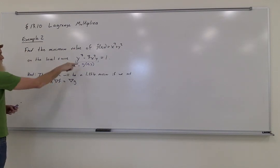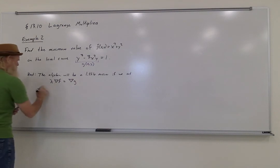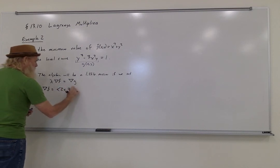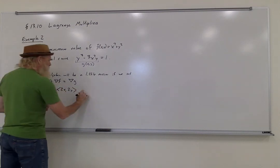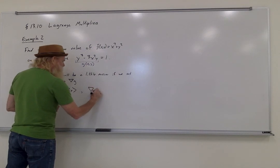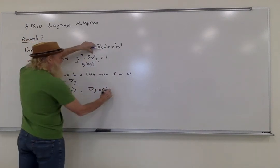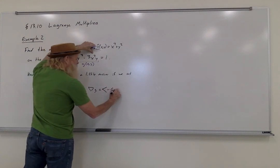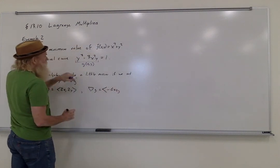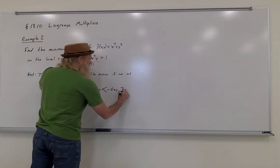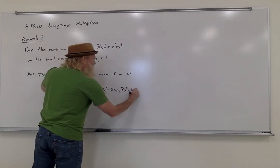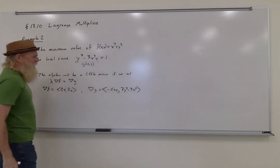The gradient of f is equal to 2x and 2y, and the gradient of g is first the derivative with respect to x, which is negative 6xy, and then the derivative with respect to y, which is 3y squared minus 3x squared.